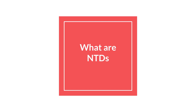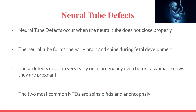Neural tube defects occur when the neural tube does not close properly. The neural tube forms the early brain and spine during fetal development. These defects develop very early on in pregnancy, even before women know they are pregnant. The two most common neural tube defects are spina bifida and anencephaly.